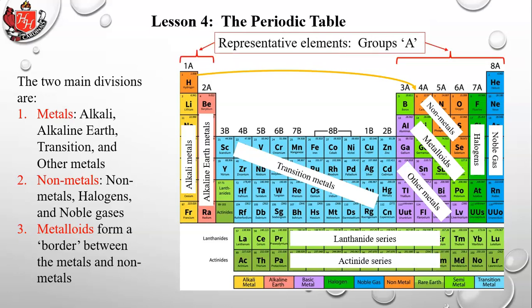The representative groups are labeled group A. An important concept coming up is valence electrons — the outermost electrons in an atom. Only the A elements contribute valence electrons: the first two columns (alkali and alkaline earth metals) and the last six columns on the right. Transition metals do not contribute valence electrons to a typical chemical bond.